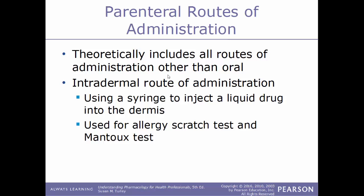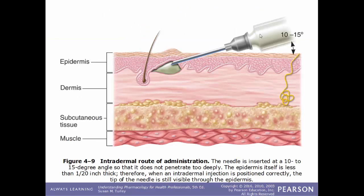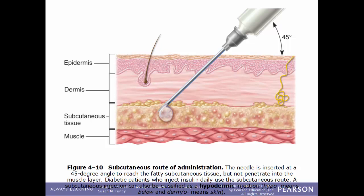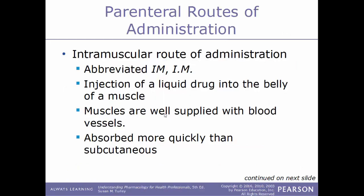The parenteral route is a broad term that includes all routes other than oral. The intradermal route uses a syringe to inject a liquid drug into the dermis and is used for allergy scratch tests or the Mantoux test for tuberculosis. The subcutaneous route (abbreviated SQ, subQ, or subcu) uses a syringe to inject into subcutaneous tissue. Because this layer is mostly fatty tissue with few blood vessels, drugs are absorbed more slowly than with intramuscular injection. This is also called a hypodermic injection because you go below the dermis.